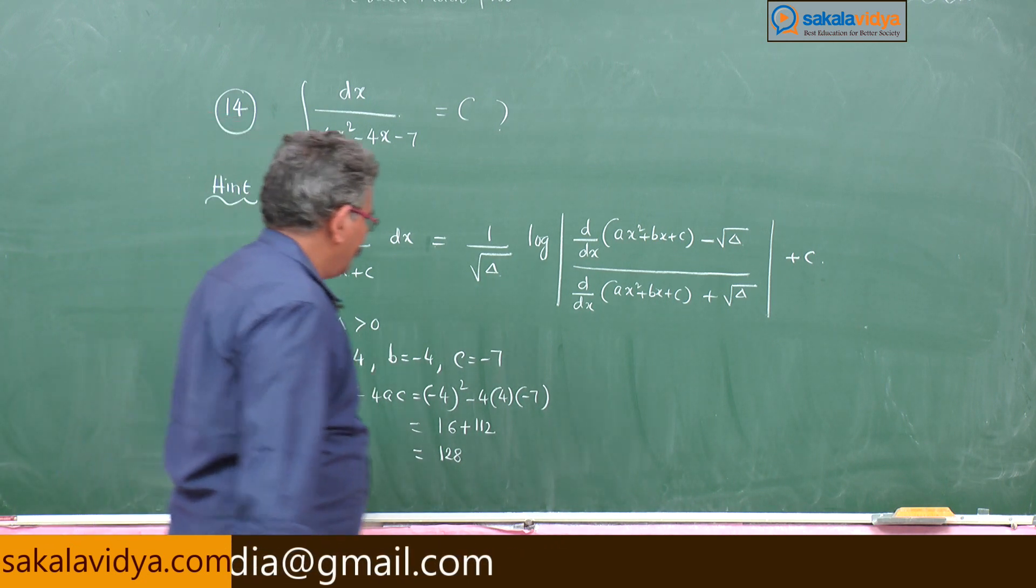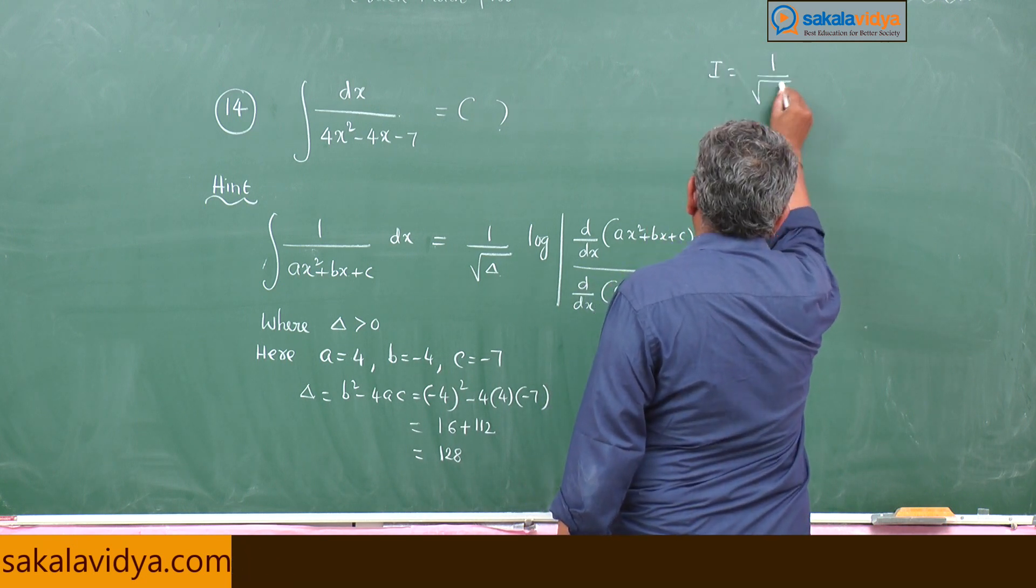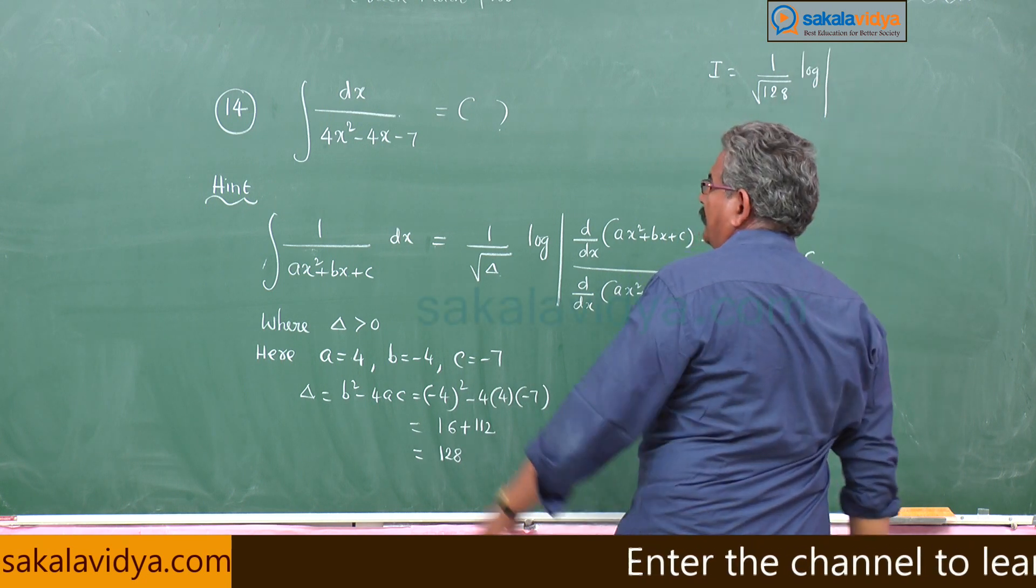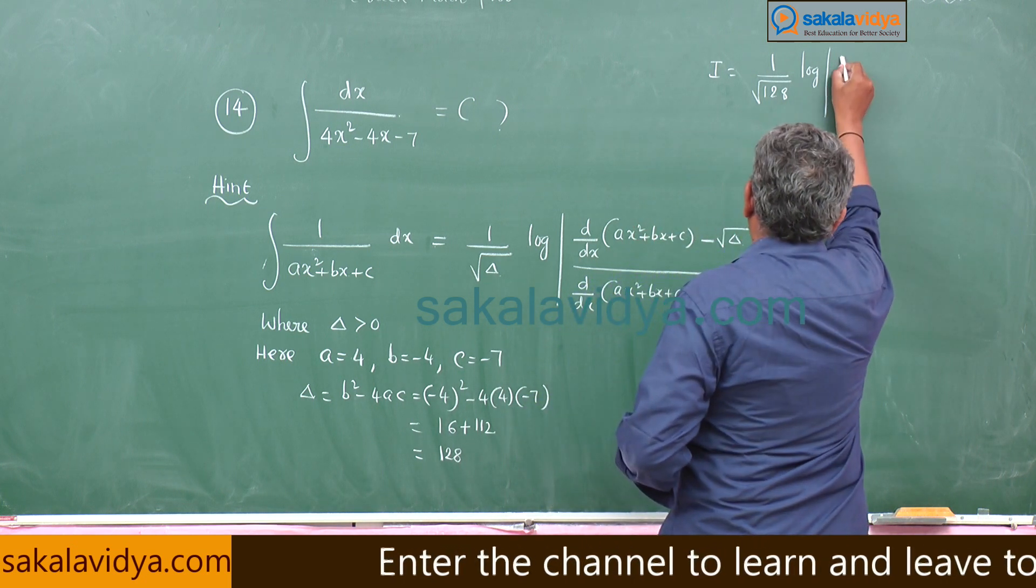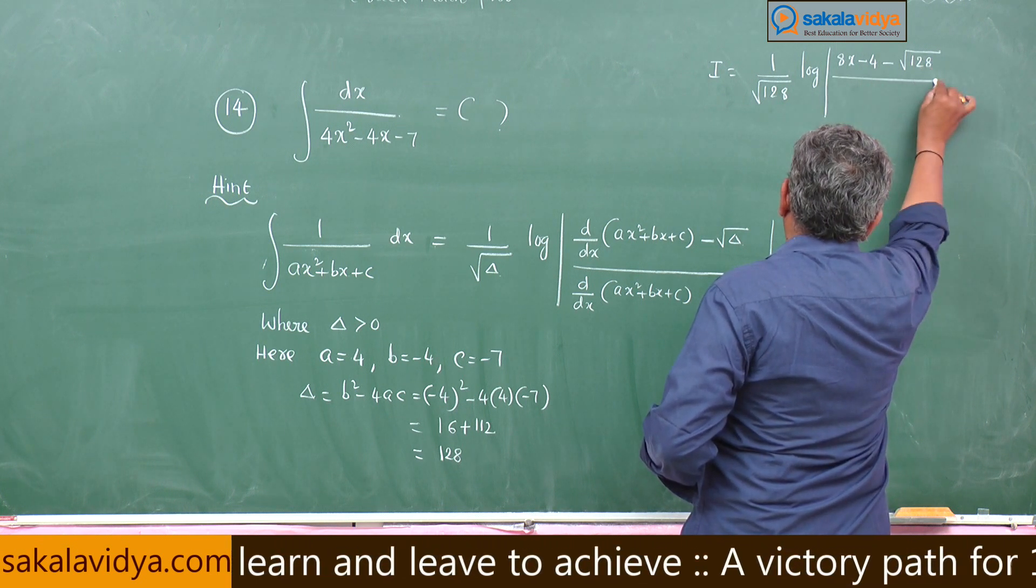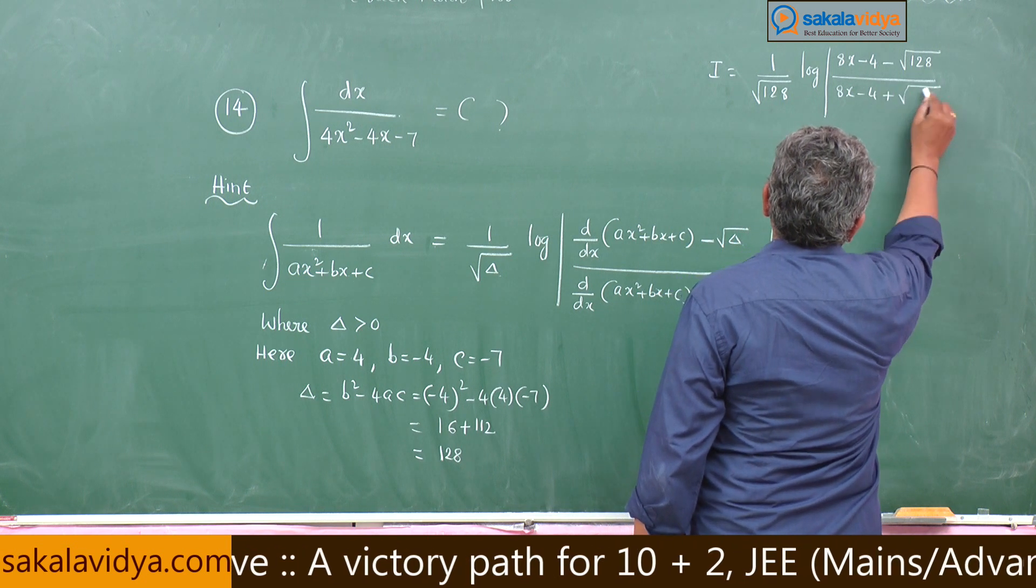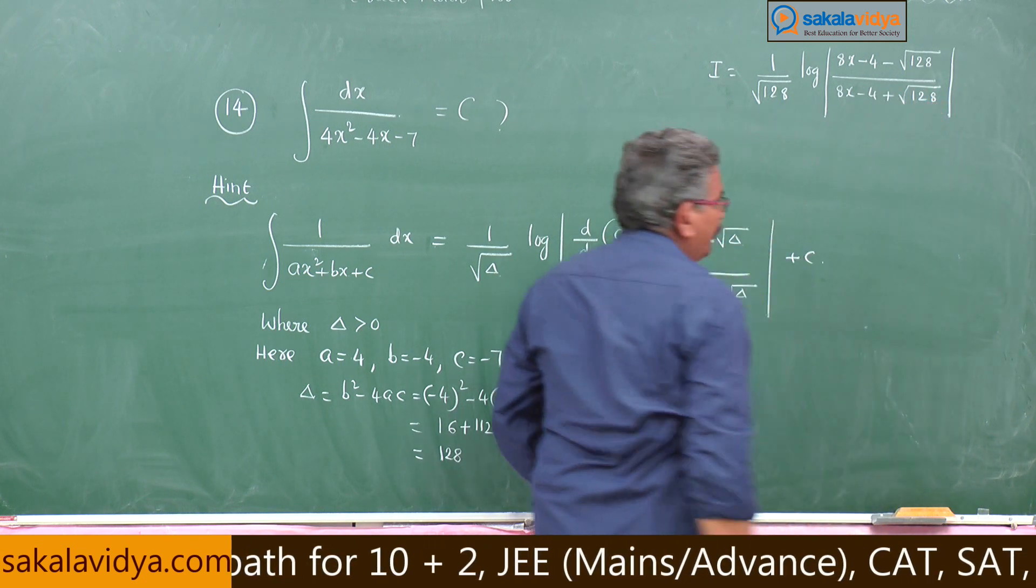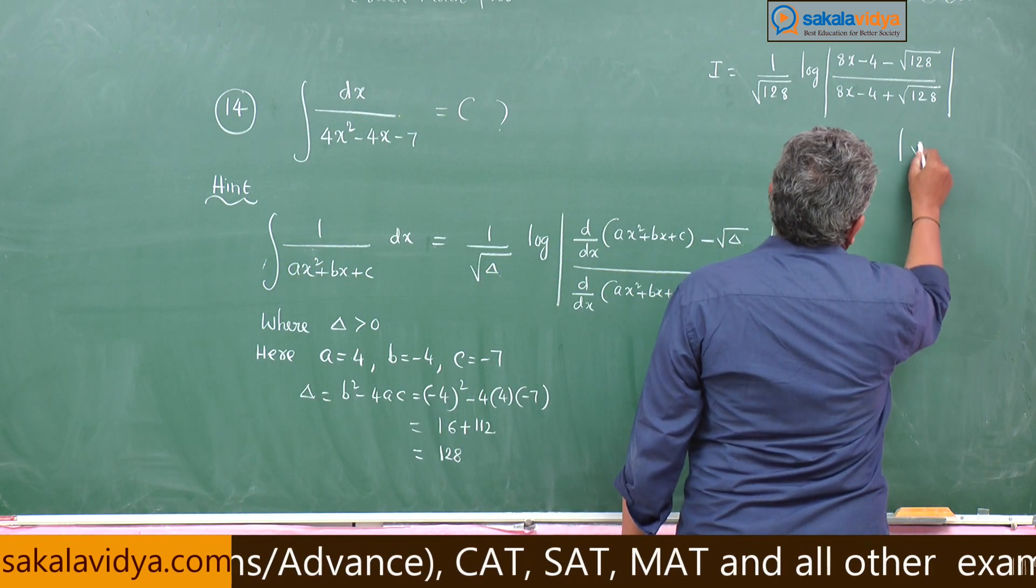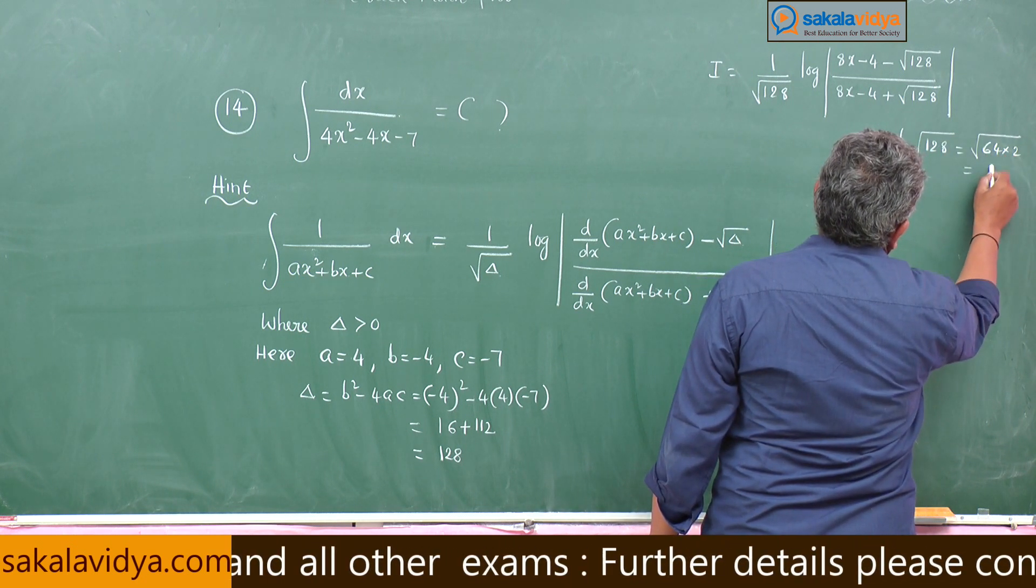So now required value i is equal to 1 by root 128 log mod differentiation of 4 x square minus 4 x minus 7, 8 x minus 4 minus root 128 by 8 x minus 4 plus root 128. Here we have to make the simplification. What is root 128? Root 128 means root 64 into 2, that is 8 root 2.